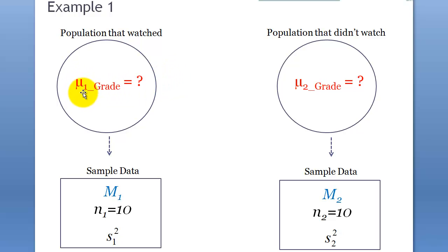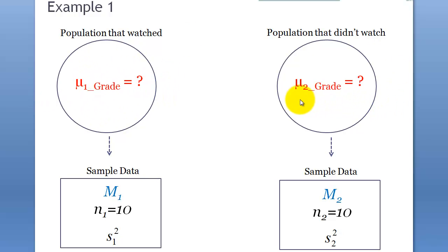Population 1 is the Sesame Street group and Population 2 is the non-Sesame Street group. What we're trying to do is compare the mean of the grades for these two groups. With Sesame Street, maybe we get better high school grades — or maybe Sesame Street is bad and you get worse grades than not watching it as a kid. That's why we want to do some tests: an independent samples test using the sample data.